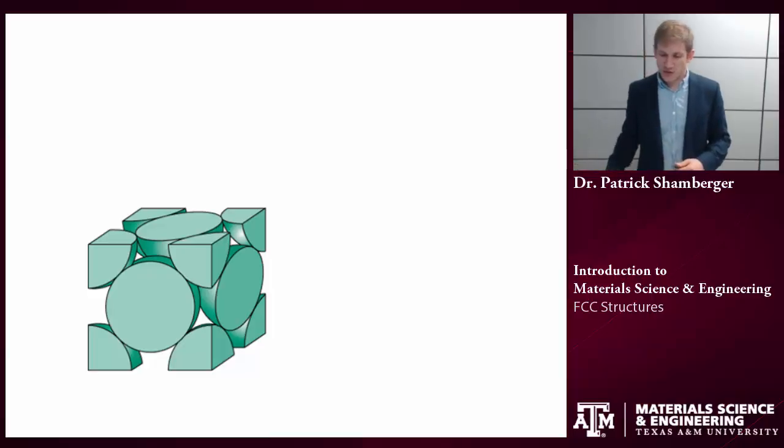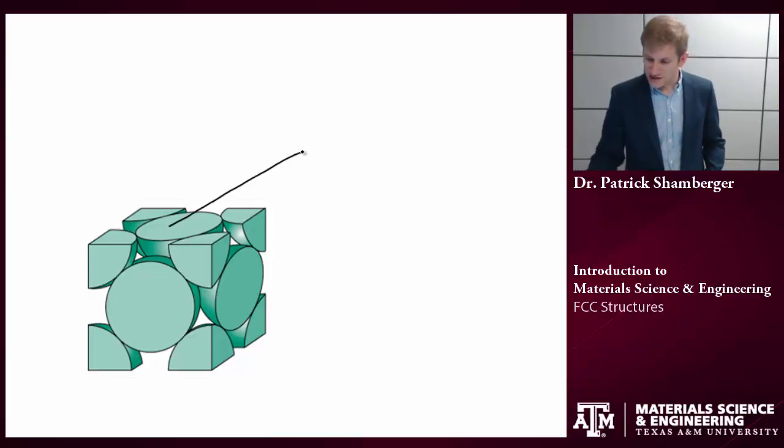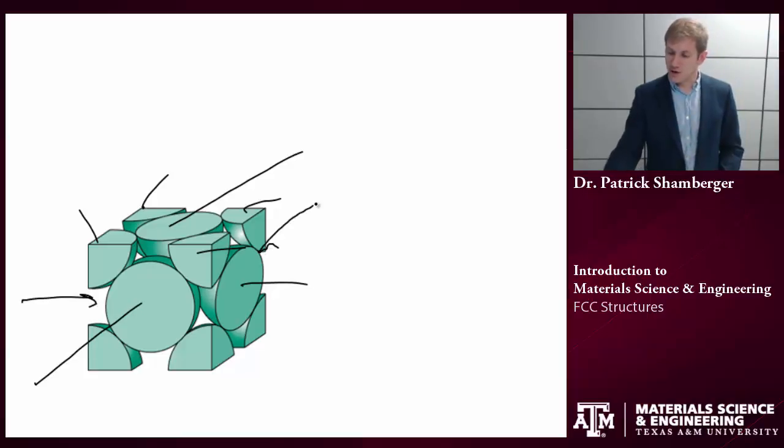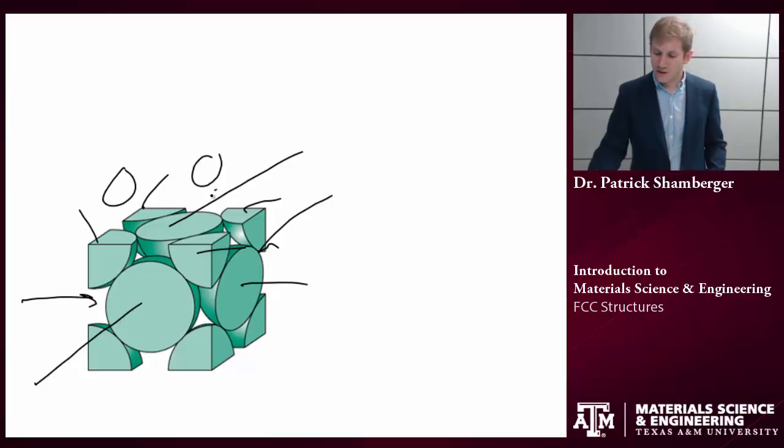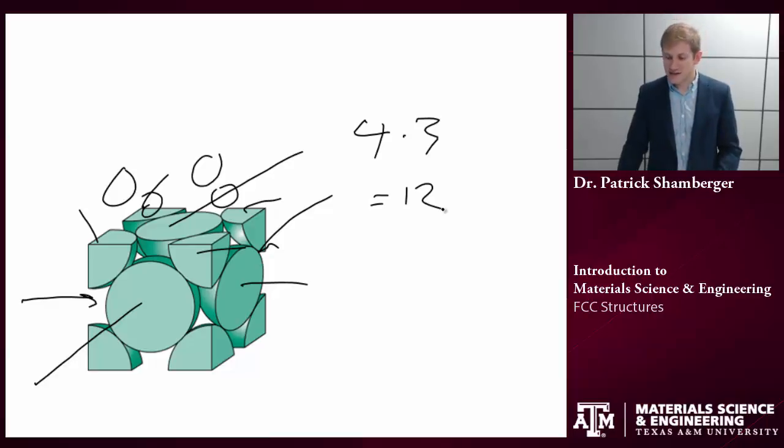Coordination number is how many atoms are surrounding one atom. To calculate the coordination number, we can start with any particular atom. Let's start with this atom. I can see immediately that there are four atoms touching it: one, two, three, four in that plane. What might be a little harder to see is that there are four atoms touching it immediately below—one, two on the right face, on the front face. There would be one on the left face and one on the back face. So that's four touching it from below, four in plane, and then I would have four touching it above. So four times three equals 12. Coordination number of the FCC lattice is 12.